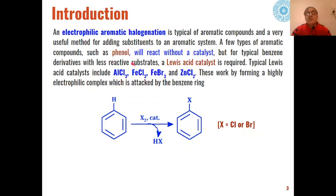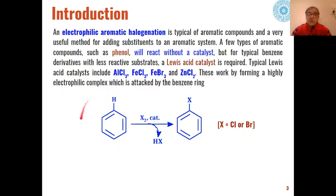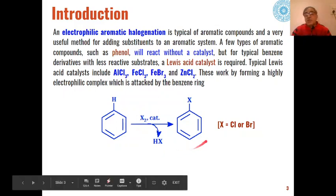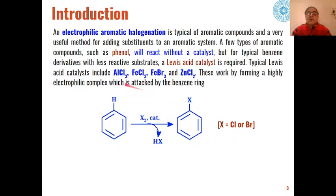For other aromatic systems, a Lewis acid catalyst is generally required. The most commonly used Lewis acid catalysts are anhydrous aluminum chloride, anhydrous ferric chloride, ferric bromide, and zinc chloride. Any of these catalysts can be used for the conversion of aromatic compounds into aromatic halides. For example, benzene in the presence of chlorine, bromine, or iodine and a catalytic amount of one of these catalysts can be converted into the corresponding aryl halide.